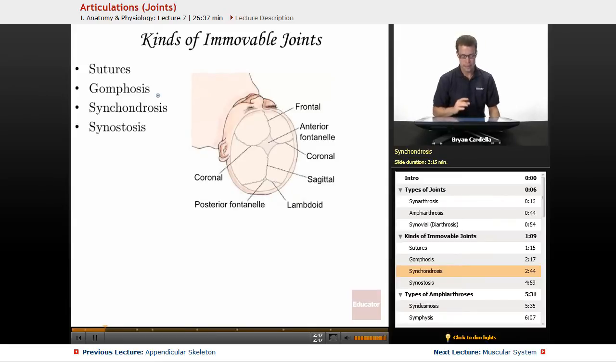Synchondrosis. Synchondrosis, there's a couple different examples, it's another completely immovable joint. If you look at how rib pair one connects to the manubrium, just posterior to the clavicles, that's not supposed to be movable.